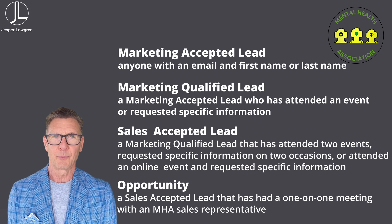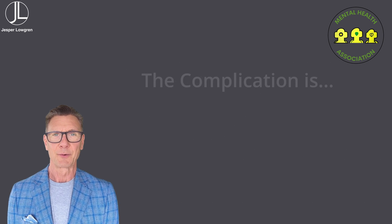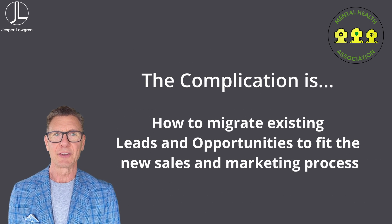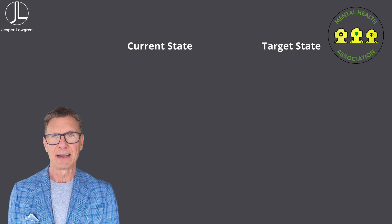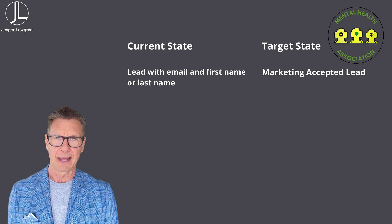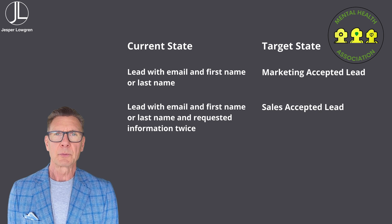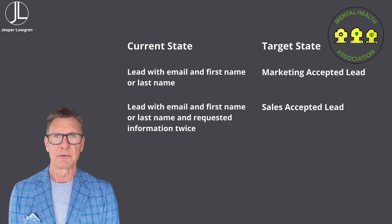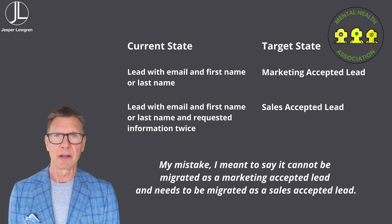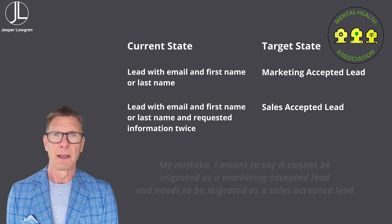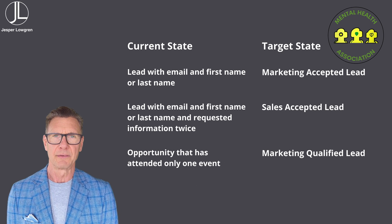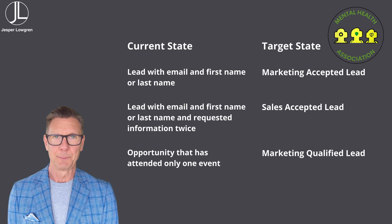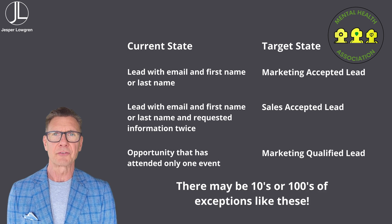The sales accepted lead is turned into an opportunity once an individual has had an online one-on-one meeting with an MHA sales representative. The question MHA is facing is how to migrate existing leads and opportunities to fit the new sales and marketing process. Some are easy — for example, any lead with a valid email address and first or last name is migrated as a marketing accepted lead. But what if a lead has requested information twice but not attended an event? In that case it cannot be migrated as a lead but needs to be migrated as an opportunity. And what if an existing opportunity has only attended one event? In that case it cannot be migrated as an opportunity but needs to be migrated as a lead. These are two simple examples. In reality there may be tens or hundreds of exceptions depending on how much the sales and marketing process has changed.